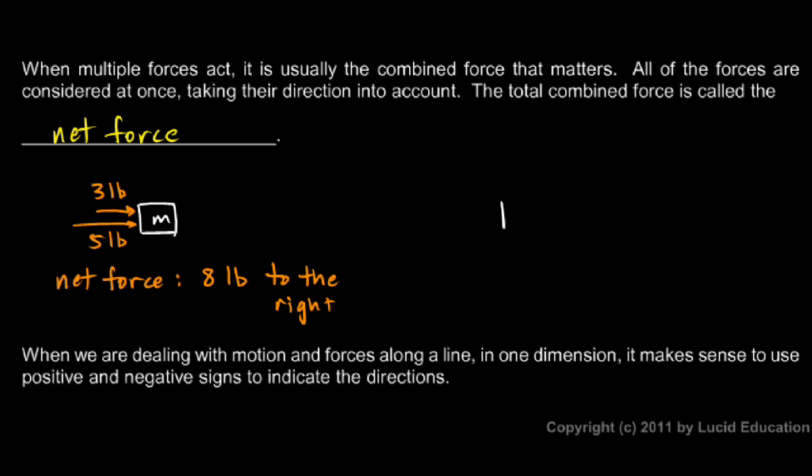Here's another example. Suppose you have a mass here, and suppose you have a 3 pound force pushing it this way, and a 5 pound force pushing it that way. Well hopefully you can see that the 5 pound force is going to win, so it will tend to move to the left. But it won't move to the left as fast as if this force were pushing it all by itself, because this force is working against it. The net force in this case, the total force taking both of those into account and their direction into account, the net force here would be a force of 2 pounds to the left.